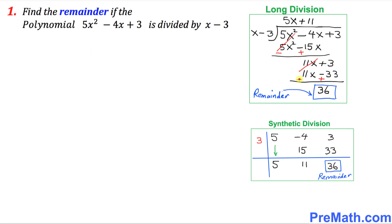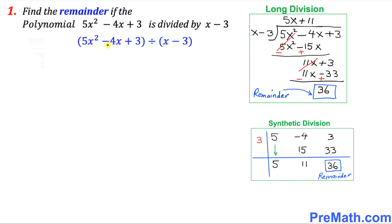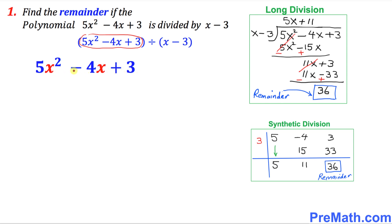As you can see, both processes are long and hectic, so we want to come up with a real simple one. This problem can also be written with the dividend divided by x minus 3. I just want you to focus on the dividend part only: 5x squared minus 4x plus 3. Now focus on the divisor — specifically the numeric part only, which is negative 3. The opposite of negative 3 is positive 3, so wherever you see the x part, it gets replaced by 3.